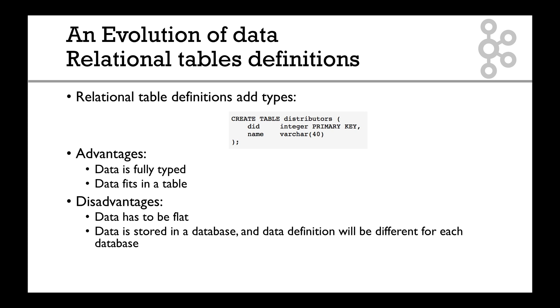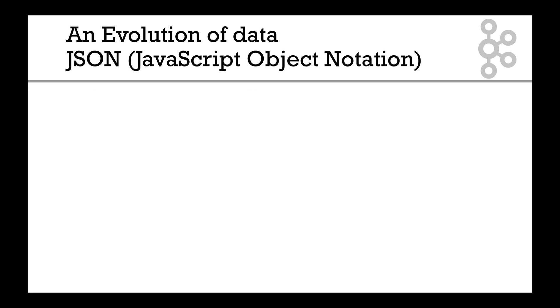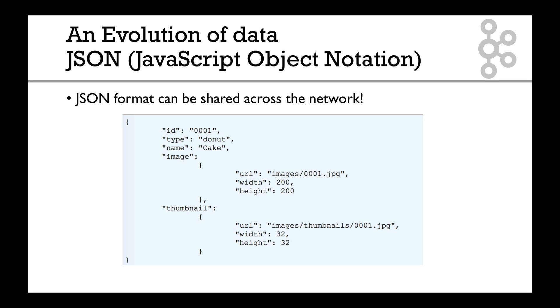Then we have JSON, which is short for JavaScript Object Notation. JSON format is awesome because it can be shared across the network as much as you want. Here's an example of a JSON object: we have an ID, a type, a name, an image, a thumbnail. You see there's some listed values and stuff - like an image has a URL, a width, and height, and a thumbnail also has a URL, a width, and height. It's pretty cool because it's all text-based.